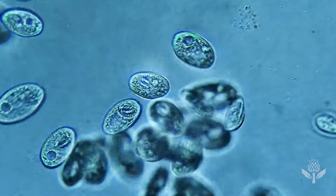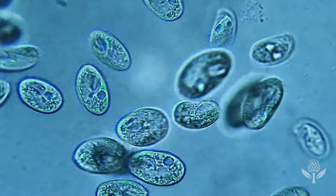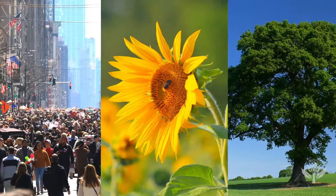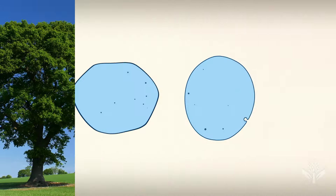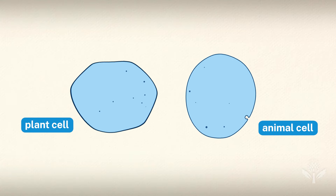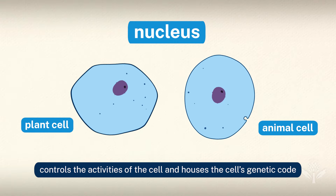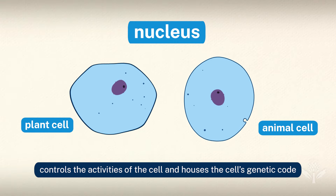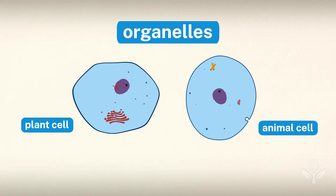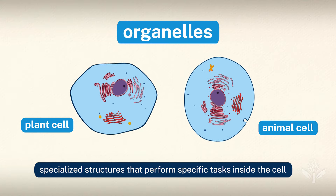All living things are composed of cells. They contain the most fundamental molecules of life, and although we humans might not resemble sunflowers or oak trees, our cells are remarkably similar. Both plant and animal cells are eukaryotic, meaning they have a clearly defined nucleus. The nucleus controls the activities of the cell and houses the cell's genetic code. Eukaryotic cells also have organelles, specialized structures that perform specific tasks inside the cell.